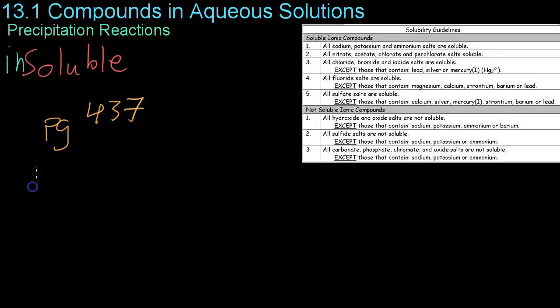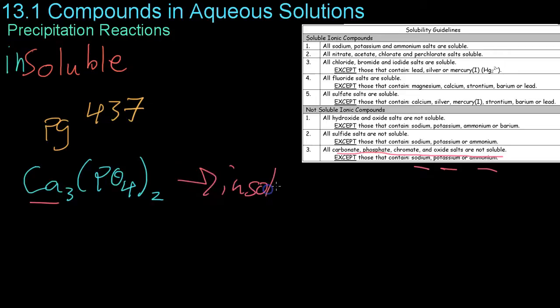If, for example, we were trying to see what would happen with calcium phosphate, we would again reference the chart and see whether or not calcium phosphate is soluble. So it says over here on the chart that all phosphate, chromate, and oxide salts are not soluble. And because in the exceptions it only has sodium, potassium, or ammonium and not calcium, we can determine that this is then insoluble. And you cannot write a dissociation for an insoluble compound.